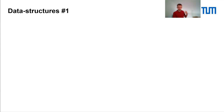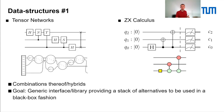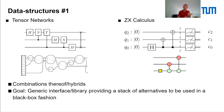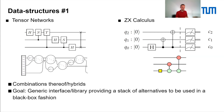Besides decision diagrams, there are also alternative data structures worth mentioning: tensor networks and the ZX calculus. I mention these because I believe that in order to have efficient and powerful tools, we need compact and efficient representations of quantum functionality and quantum states. Decision diagrams, but also tensor networks and the ZX calculus, may provide that.